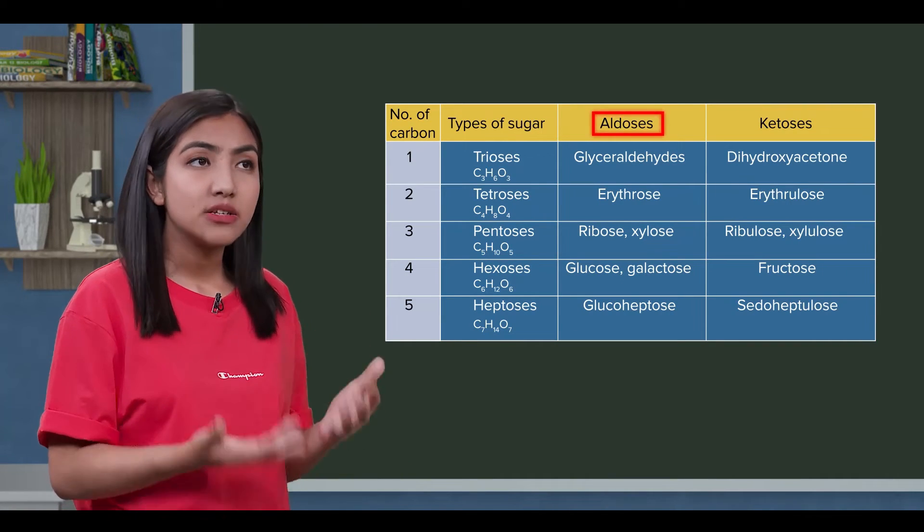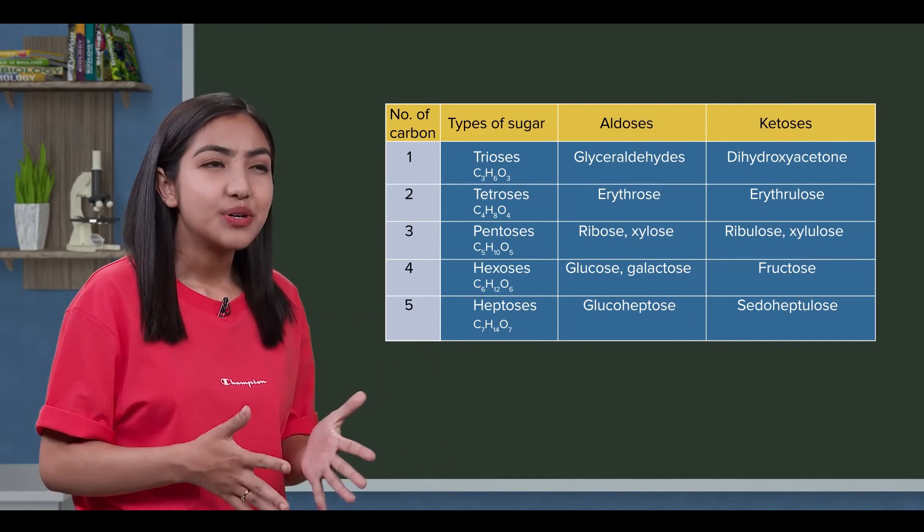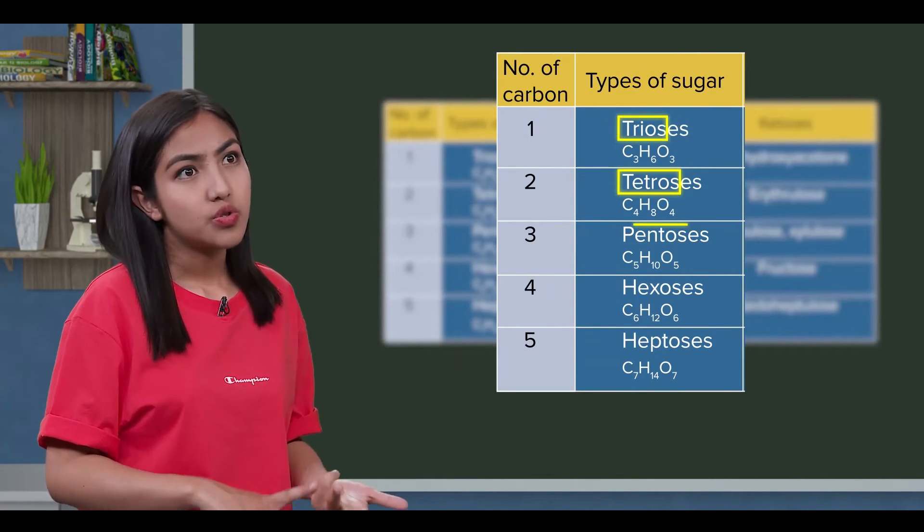Monosaccharides are classified as aldoses and ketoses. And by carbon number: triose, tetrose, pentose, hexose. That's right.